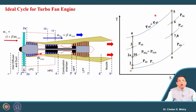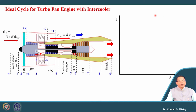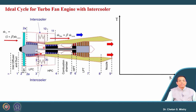Can we achieve higher thermal efficiency without increasing the turbine entry temperature? Let us explore that possibility. Suppose we consider a turbofan engine in which we add a component called an intercooler. This intercooler is a heat exchange device — a heat exchanger — where exchange of heat takes place, so the hot fluid gets cooled and the cold fluid gets heated.